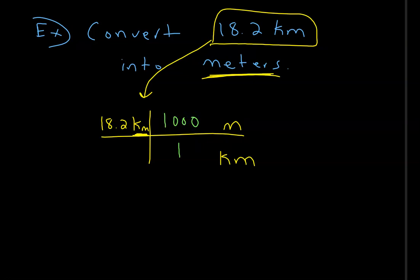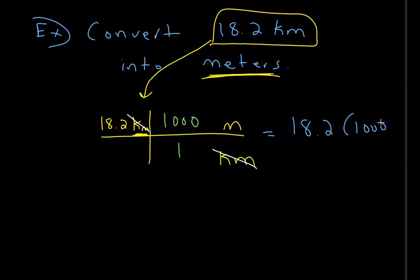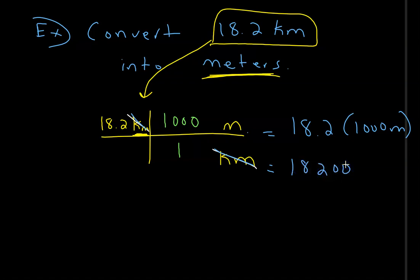One kilometer equals 1,000 meters. When I multiply across, the kilometers cancel, leaving 18.2 times 1,000. Moving the decimal three places to the right gives 18,200 meters. So 18.2 kilometers equals 18,200 meters.